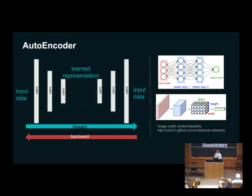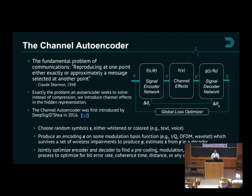We have this structure where we have an encoder network on the left side and a decoder on the right. We put channel effects into the middle. You put in random bits and get out bits that should represent what you put in, then compute the loss. If you write the channel effects in a differentiable way using a differentiable language, then you can backpropagate through your decoder, through your channel, and through your encoder — giving you an end-to-end optimized system. It turns out this works very well.